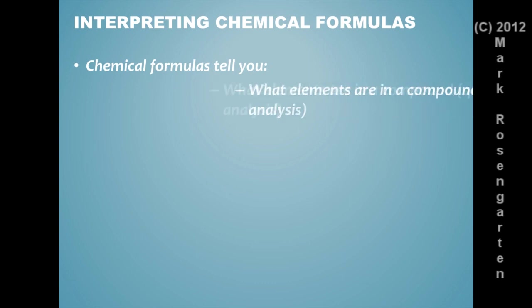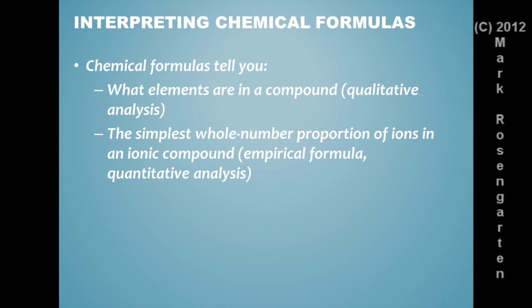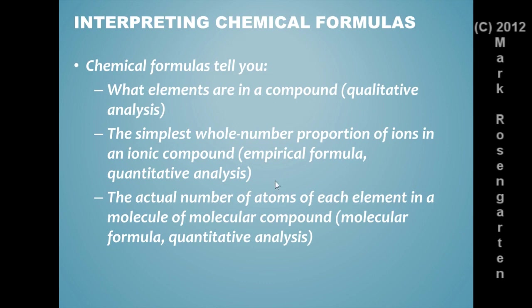Chemical formulas tell you what elements are in a compound. We call that qualitative analysis. The simplest whole number proportion of ions in an ionic compound, also called the empirical formula, is quantitative analysis because it gives you quantity. And the actual number of atoms of each element in a molecule of molecular compound, called a molecular formula, and we call that quantitative analysis too because we're dealing with number.